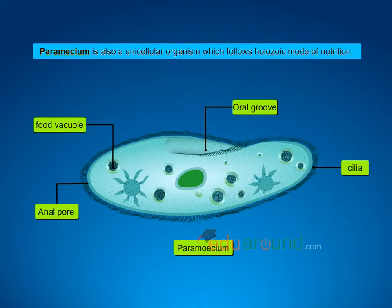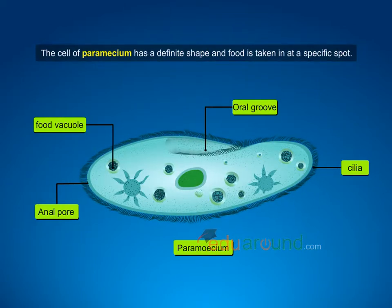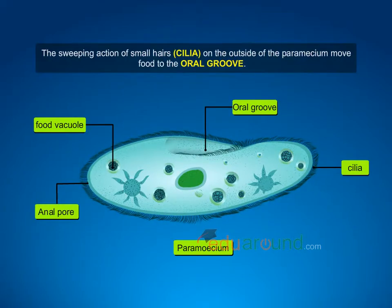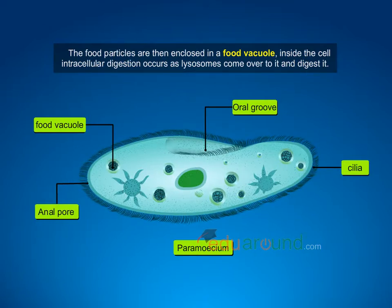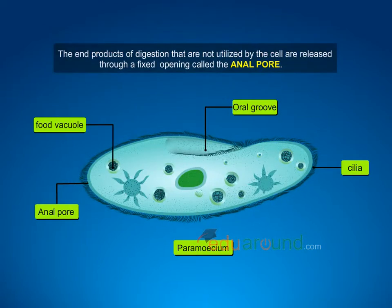Paramecium is also a unicellular organism which follows holozoic mode of nutrition. The cell of paramecium has a definite shape and food is taken in at a specific spot. The sweeping action of small hairs, i.e. cilia, on the outside of the paramecium move food to the oral groove. The food particles are then enclosed in a food vacuole. Inside the cell, intracellular digestion occurs as lysosomes fuse with it and digest it. The end products of digestion that are not utilized by the cell are released through a fixed opening called the anal pore.